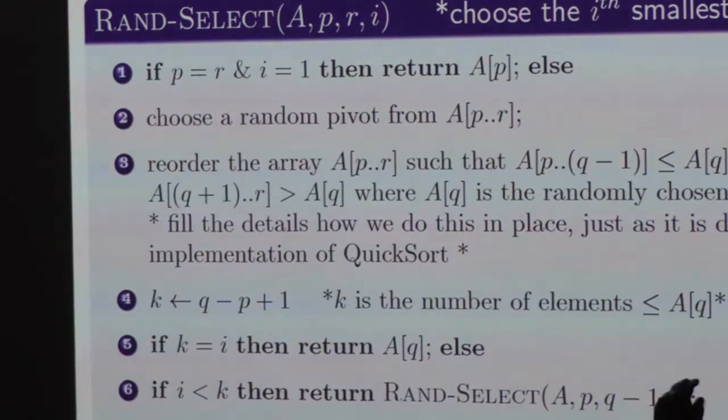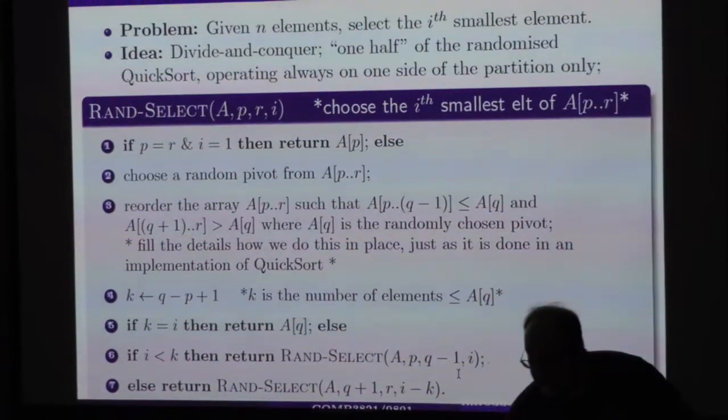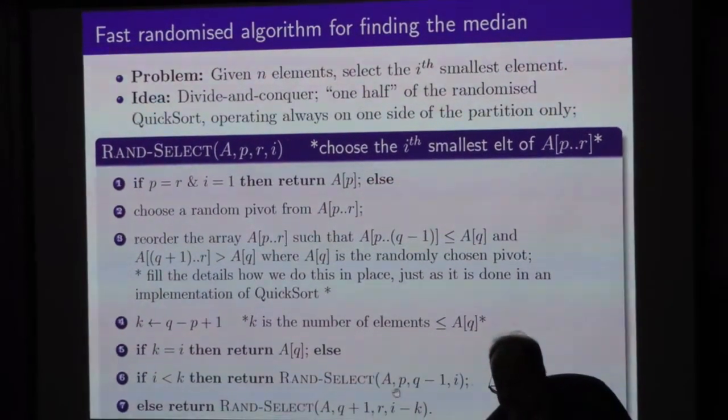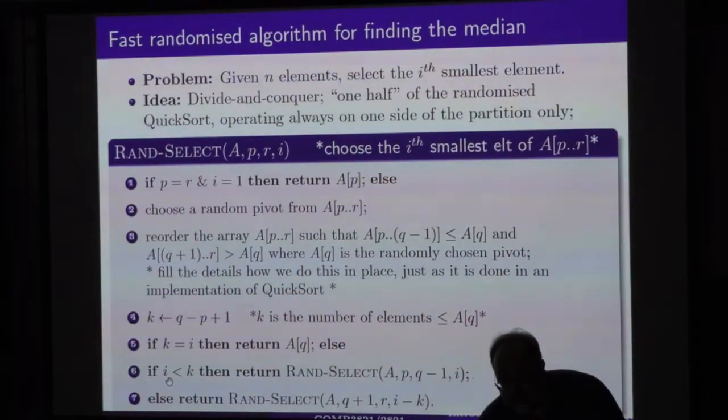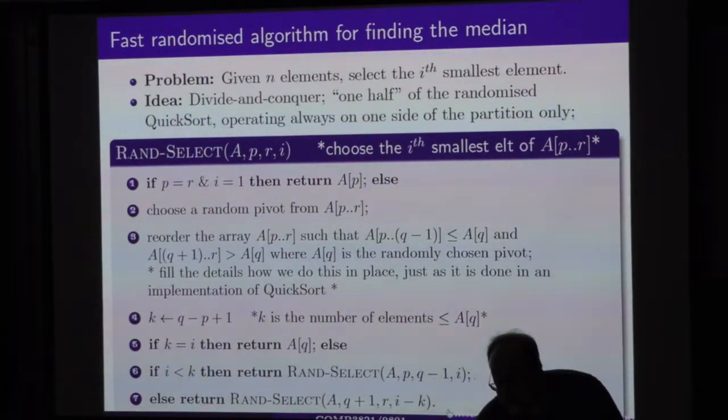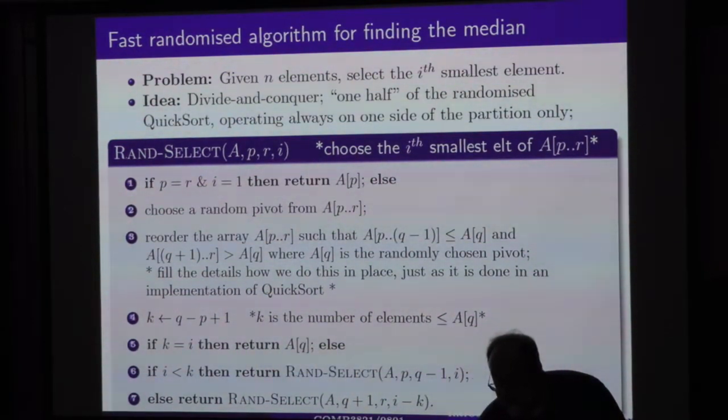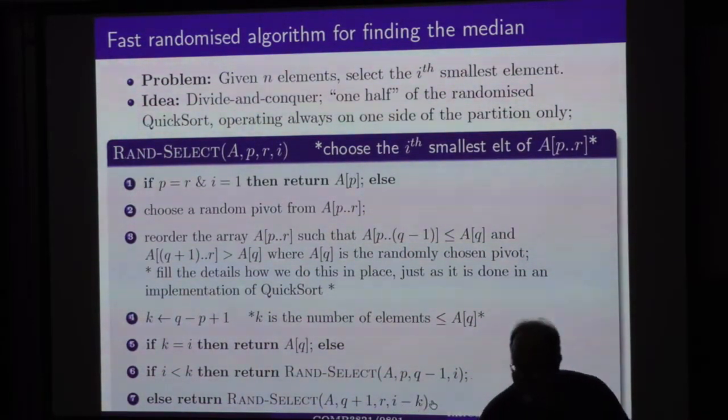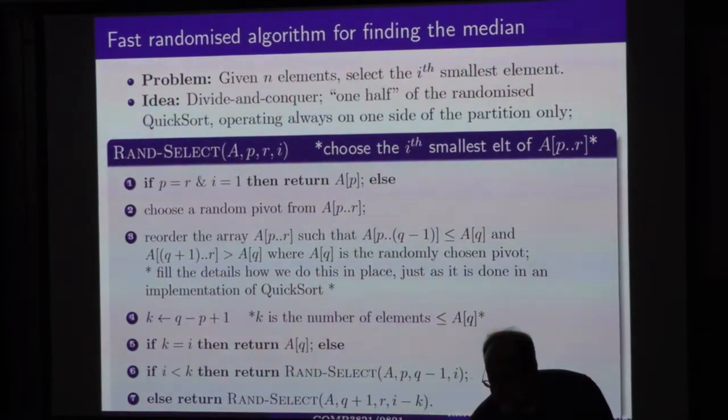If i is smaller than k, your elements are on the left. They are among p up to q minus 1 on the left. And otherwise, if i is bigger, it resides on the right-hand side of the partition. So you recursively apply this, but now you are looking not for the i-th element, but i minus k element to account that you threw away k smaller elements of the left side of the partition.